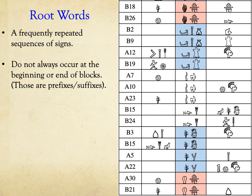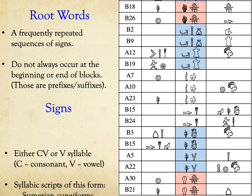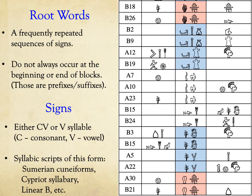We assume that each sign denotes a syllable that is either a consonant-vowel pair or a single vowel. Many syllabic scripts of this type existed in the Bronze Age, including the Sumerian cuneiform, the Cypriot syllabary, and the Linear B script, which is a descendant of Linear A, also from Crete.